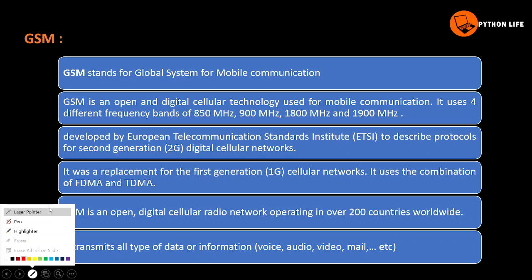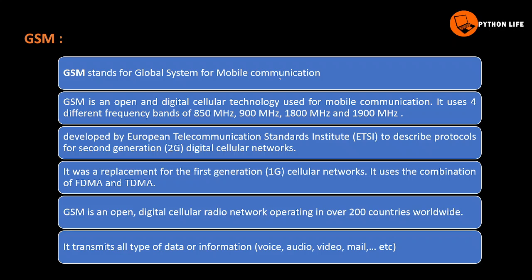GSM stands for Global System for Mobile Communication. This is an open and digital cellular technology used for mobile communication. There are four types of frequency bands used for communication purposes: 850, 900, 1800, and 1900.